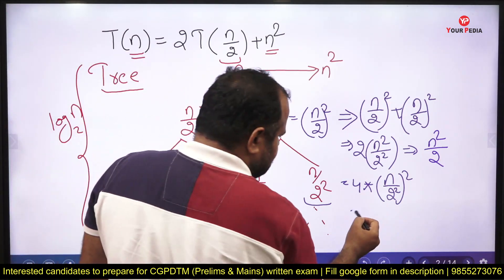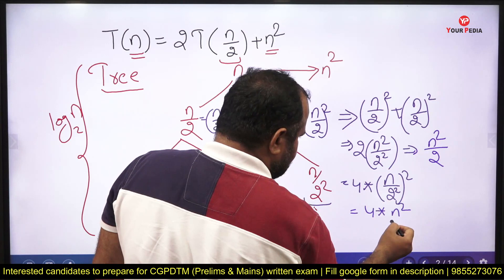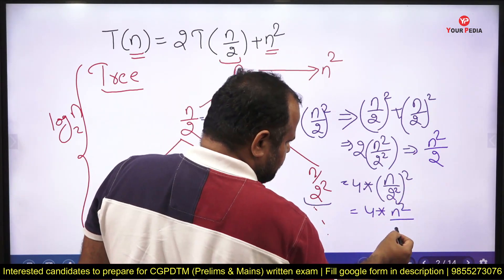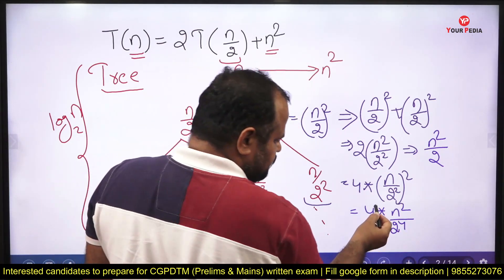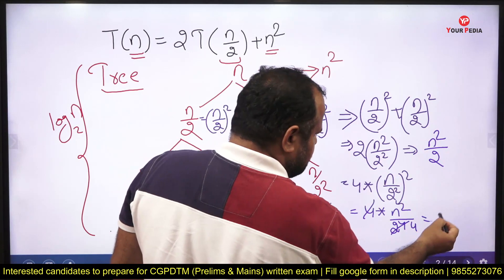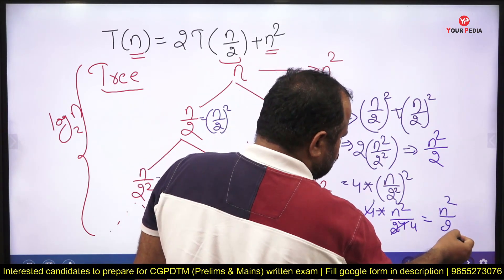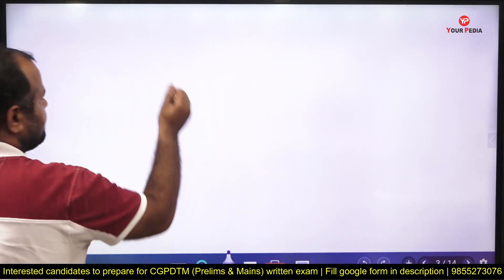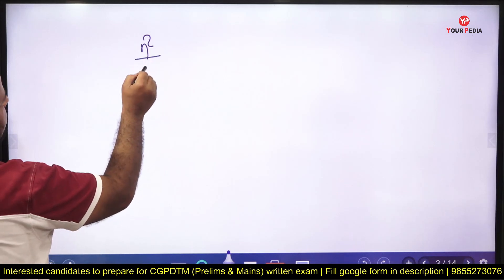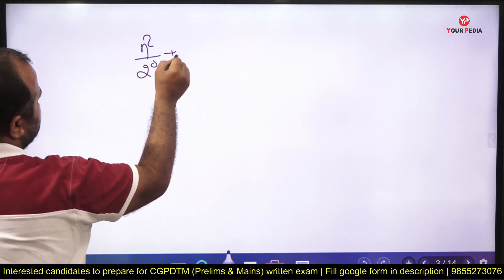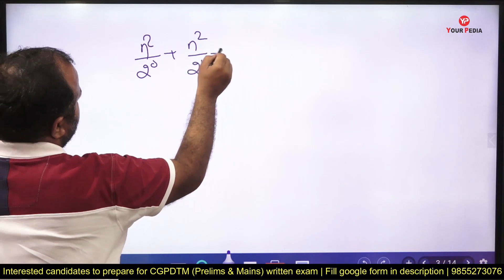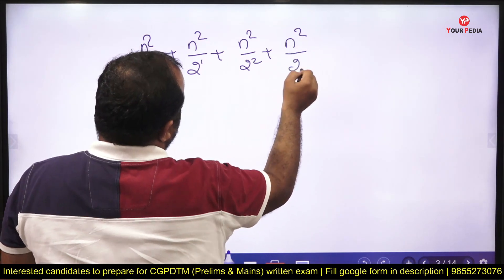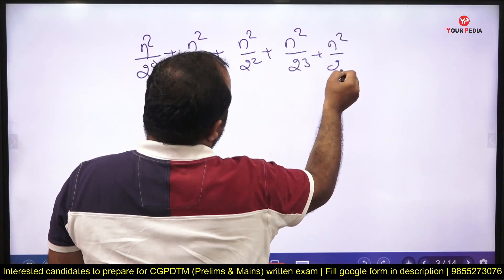The total cost at the third level is 4·(n/2²)² = 4·n⁴/2⁴ = n²/4 = n²/2². So the series of costs level by level is: n²/2⁰ + n²/2¹ + n²/2² + n²/2³ + ... up to n²/2^(log n).